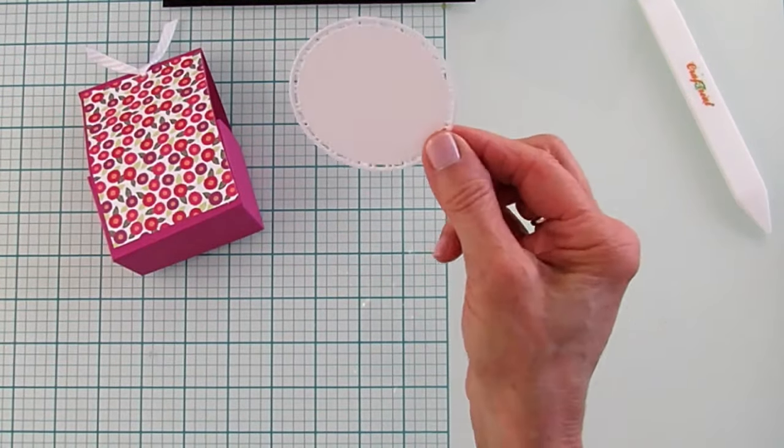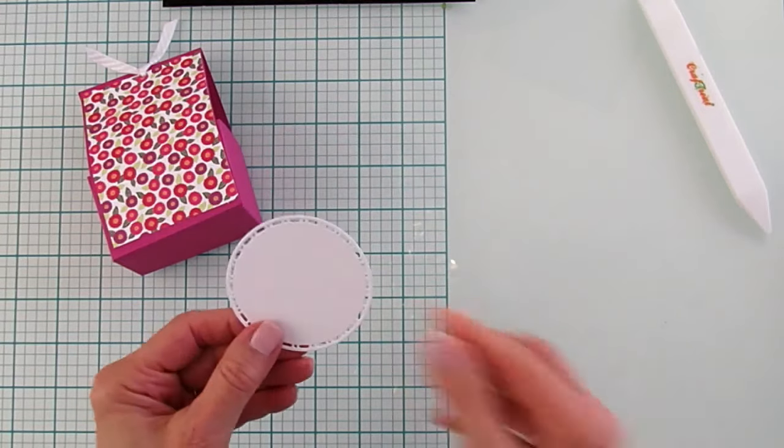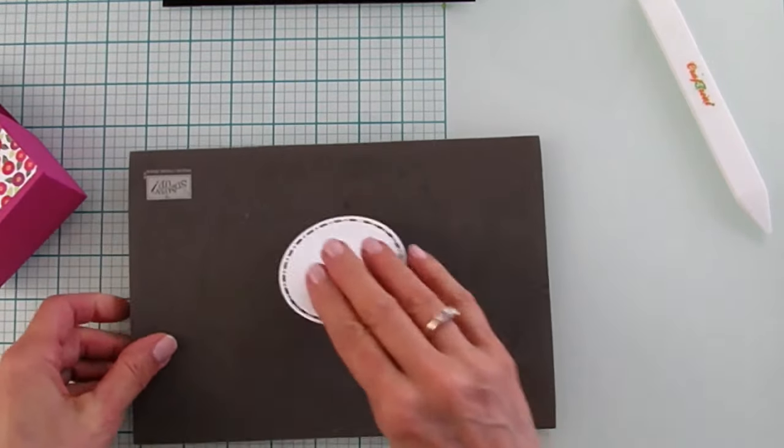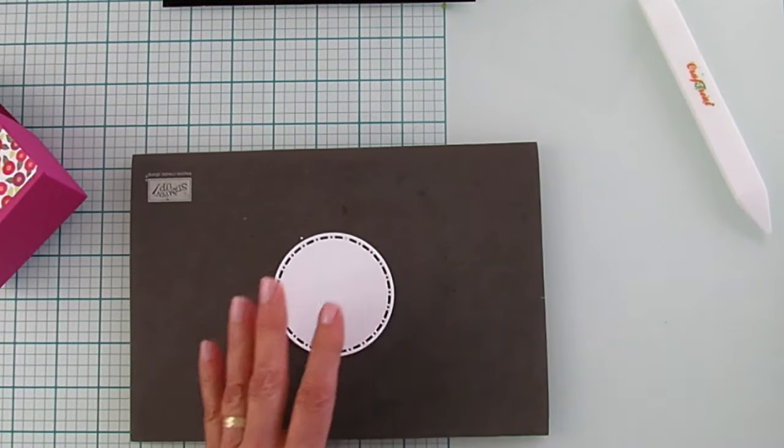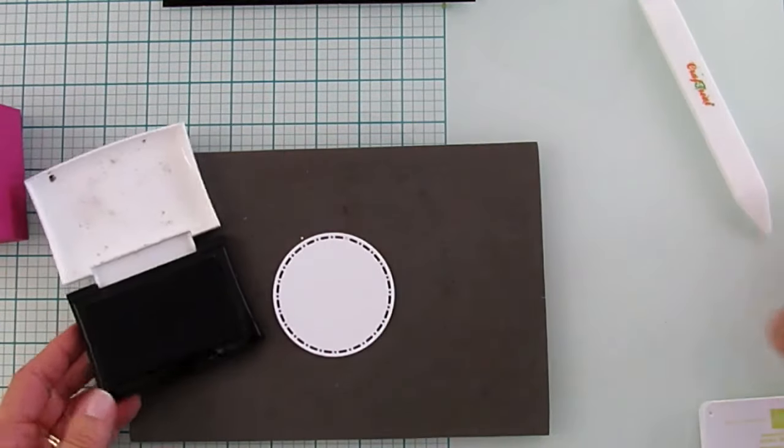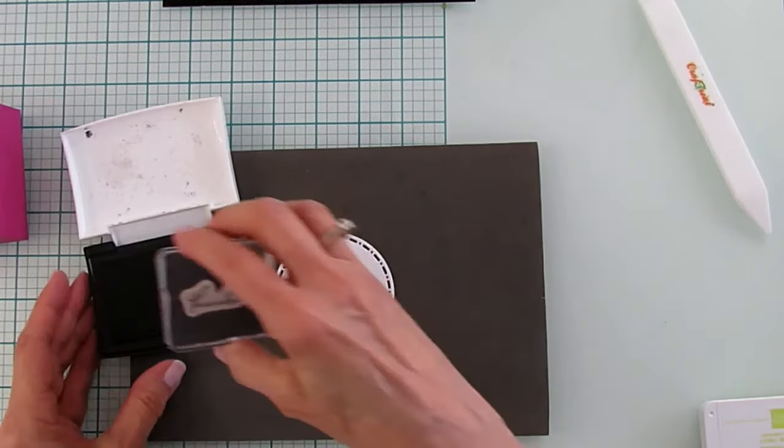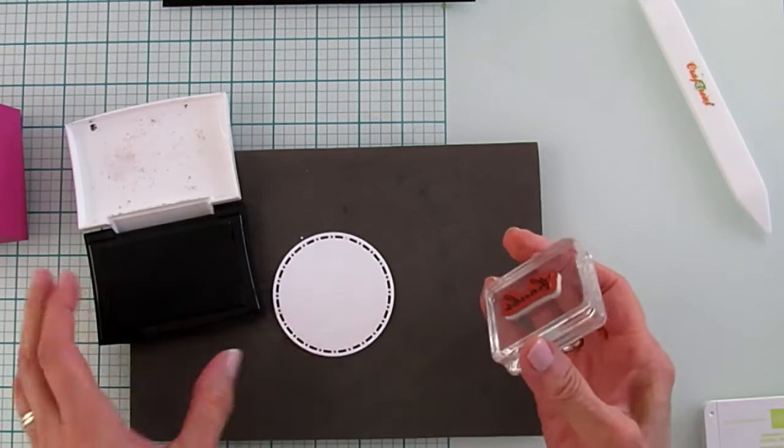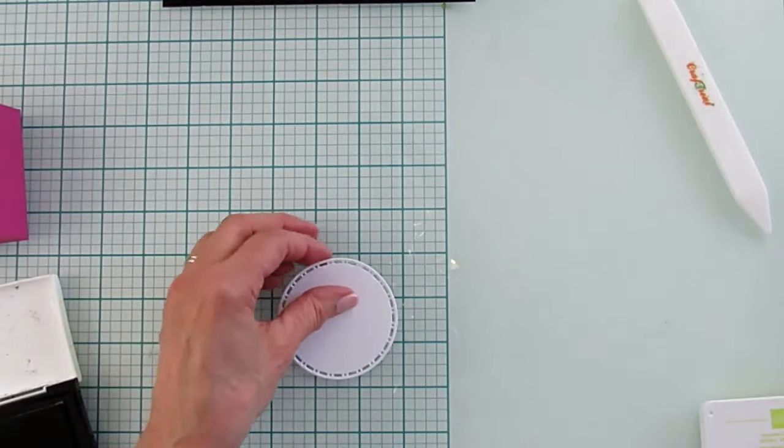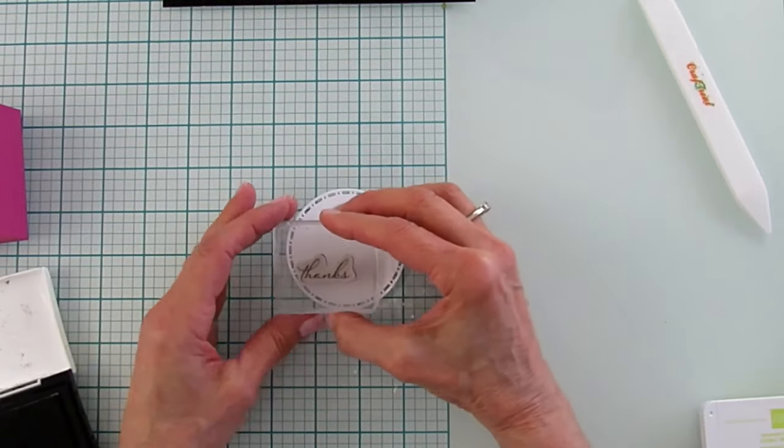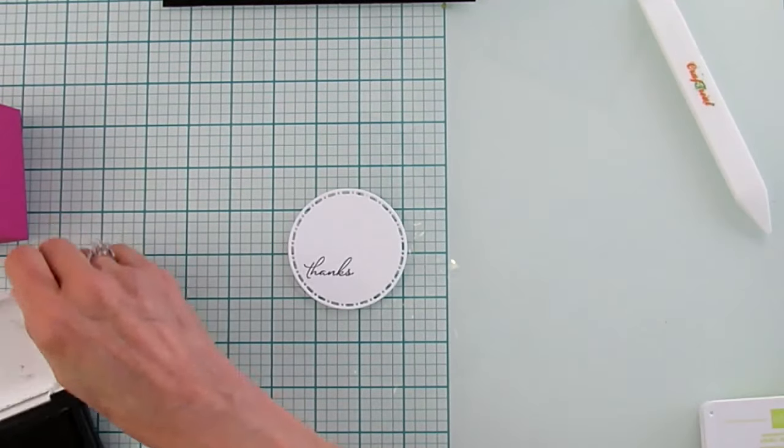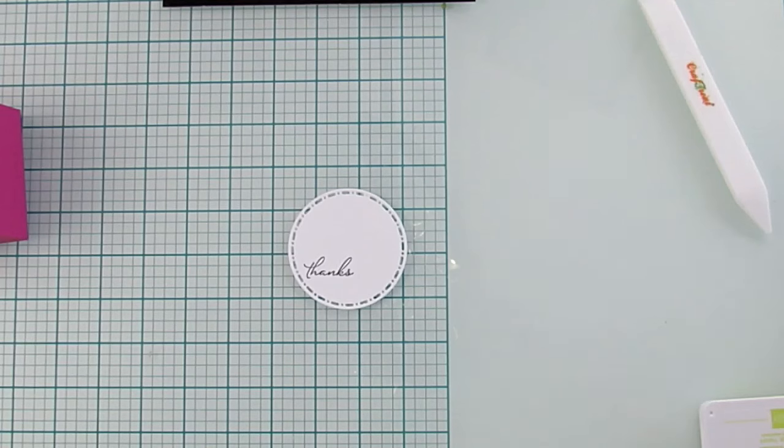Now we have that piece all ready to go. I'm going to grab my mat again, and we're going to stamp on this mat. We are going to stamp using the VersaFine for the sentiment. So I'm going to stamp the sentiment first. And by the way, you don't even need this mat for these rubber stamps. So let's just do it without. So I'm going to do the thanks down here. This is a really pretty thanks as well, y'all.